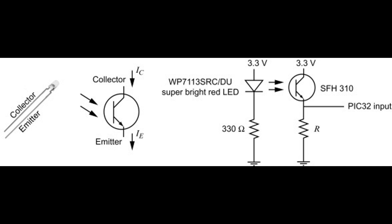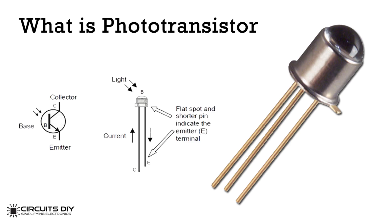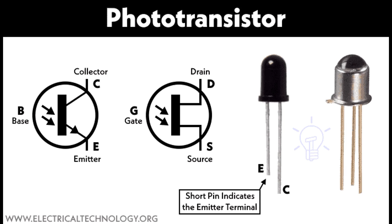Types of phototransistors: Phototransistors come in various types, each suited for different applications. NPN phototransistors comprise an N-type emitter, a P-type base, and an N-type collector. When exposed to light, electron-hole pairs are generated in the base region; electrons move to the collector and holes move to the base, increasing the collector current. Commonly used in general light sensing applications, optoisolators, and optical switches.